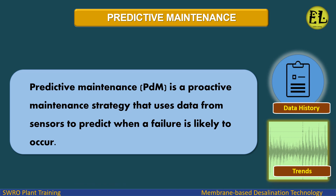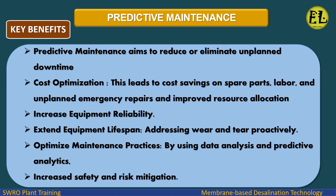Predictive Maintenance (PDM) is a proactive maintenance strategy that uses data from sensors to predict when a failure is likely to occur. Key benefits: predictive maintenance aims to reduce or eliminate unplanned downtime.